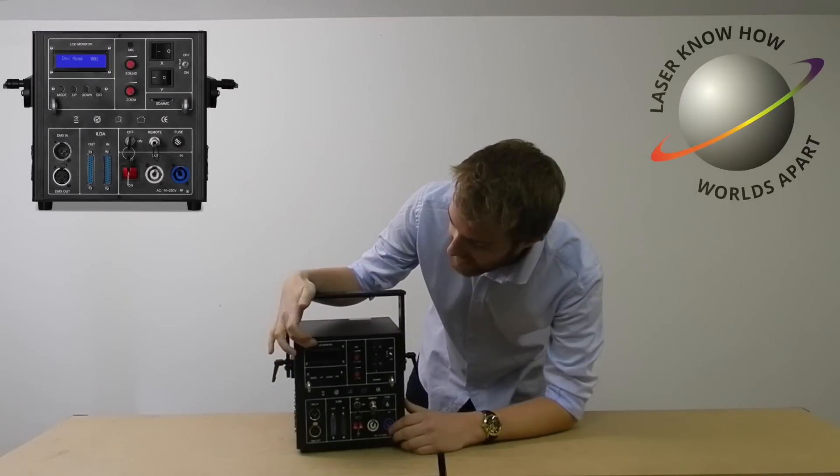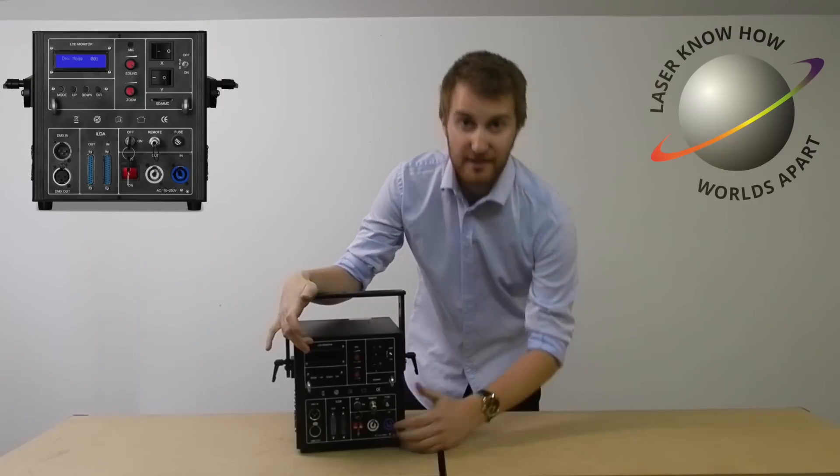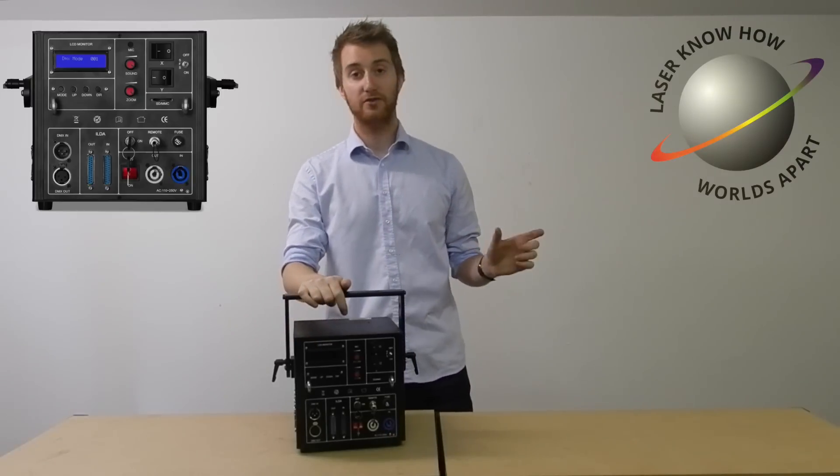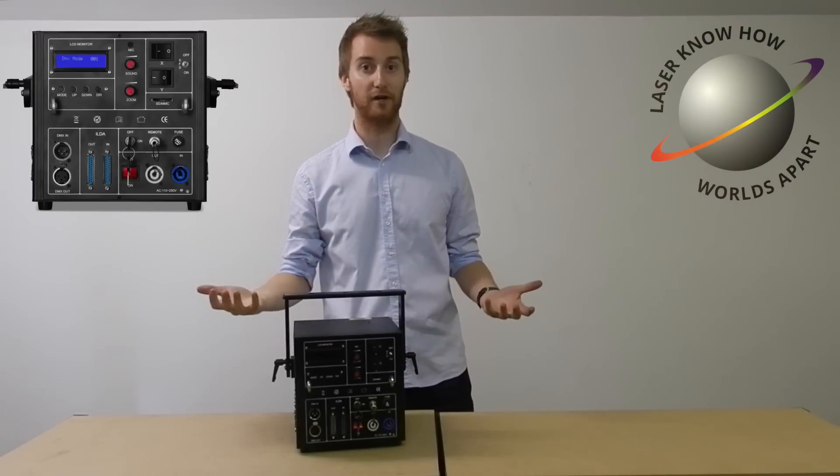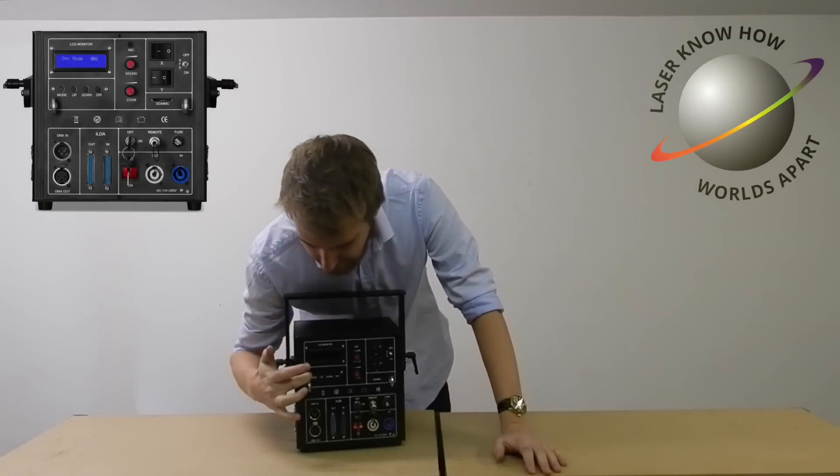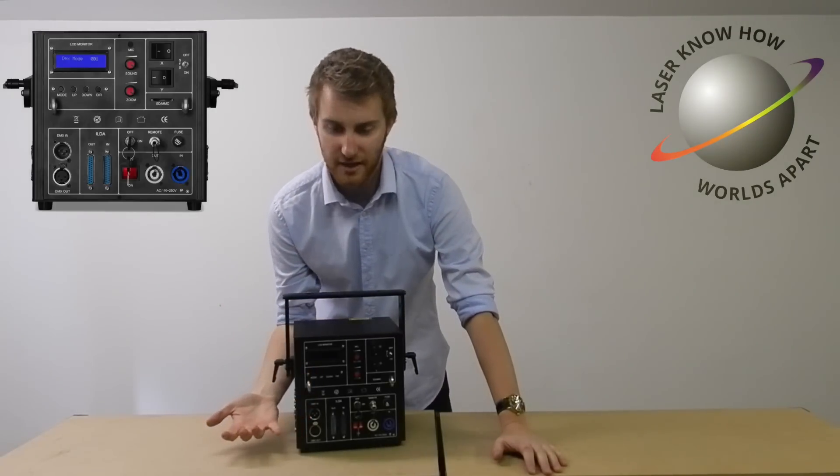If we look in the top corner, you've got the LCD monitor. All that's doing is taking the features that used to be controlled by dip switches on older lasers and giving you a visual readout of what you're doing. With the mode button here, it allows you to cycle between the different features the laser's got.